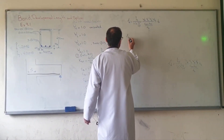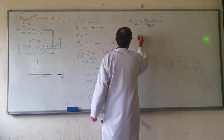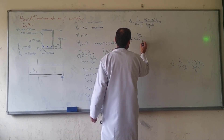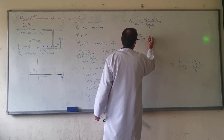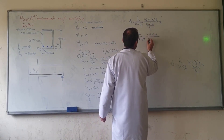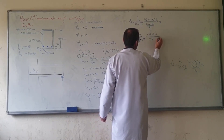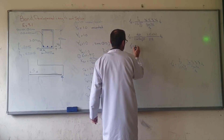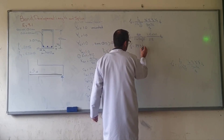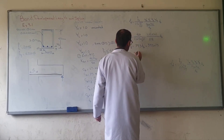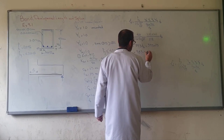Now substitute into the development length equation. Using Method 1 (full formula): 1.1 times 1 times 1 times 1 times 1 times 1, substituting all factors into the equation to get the development length LD.